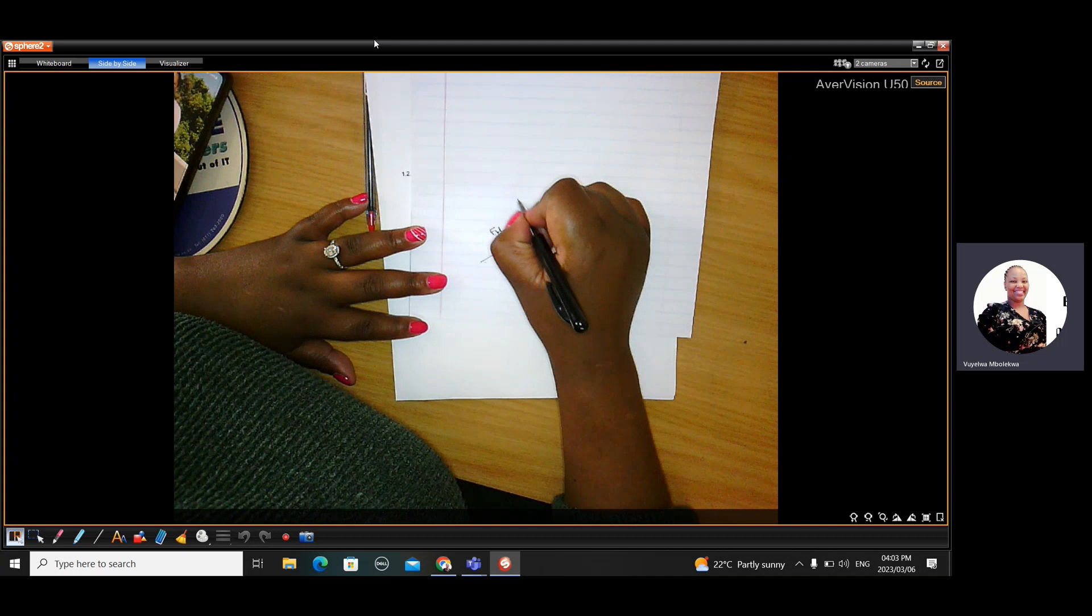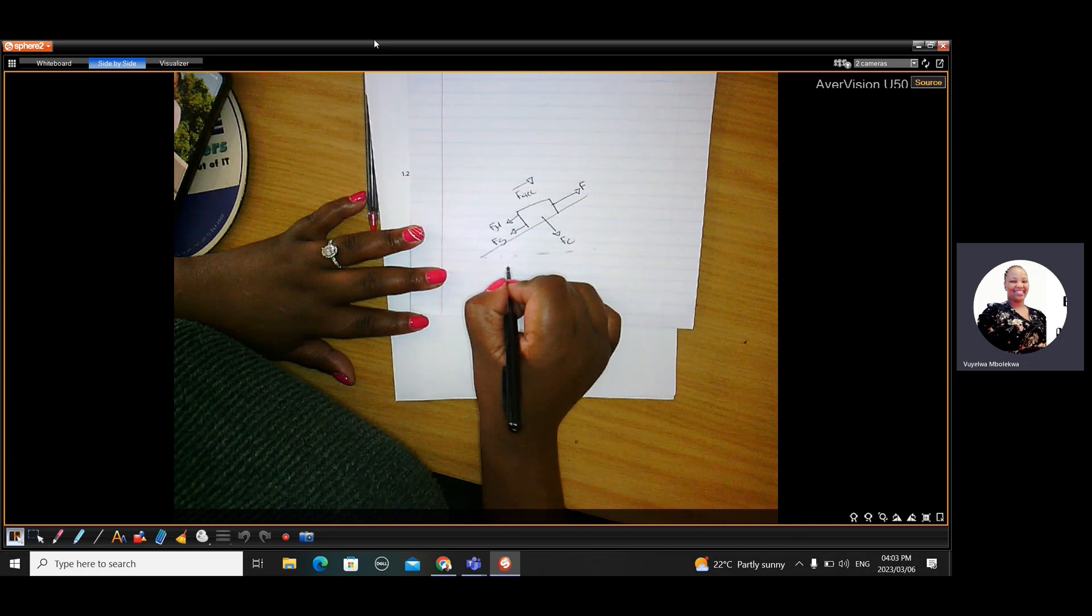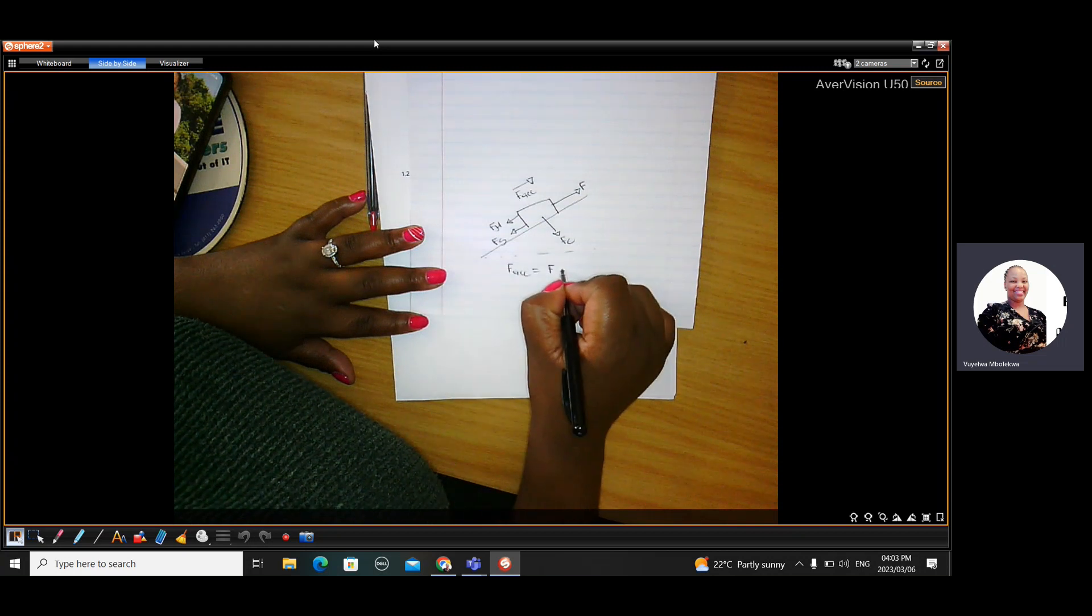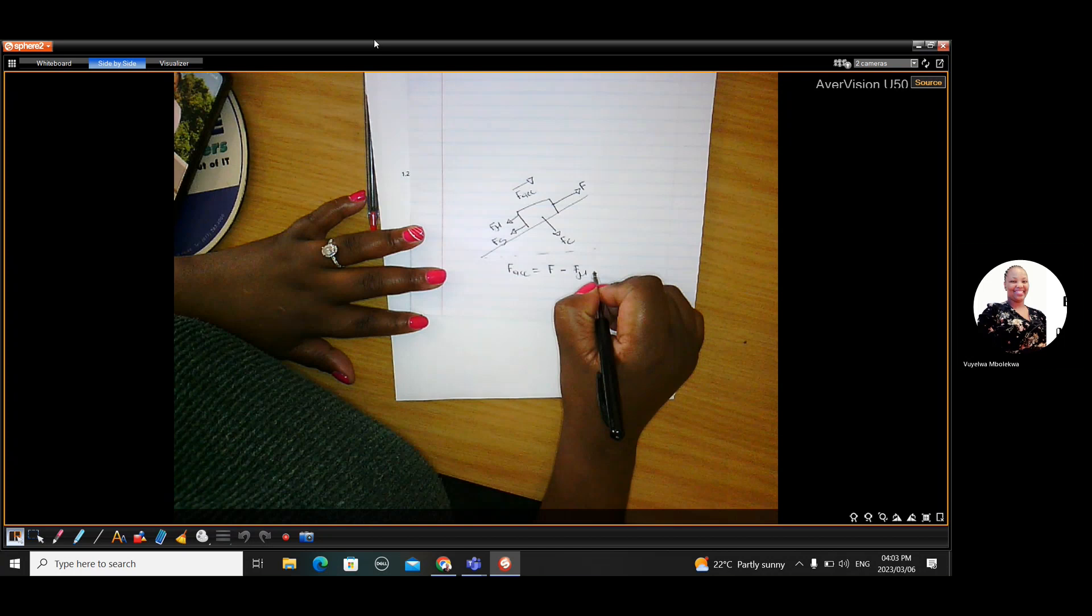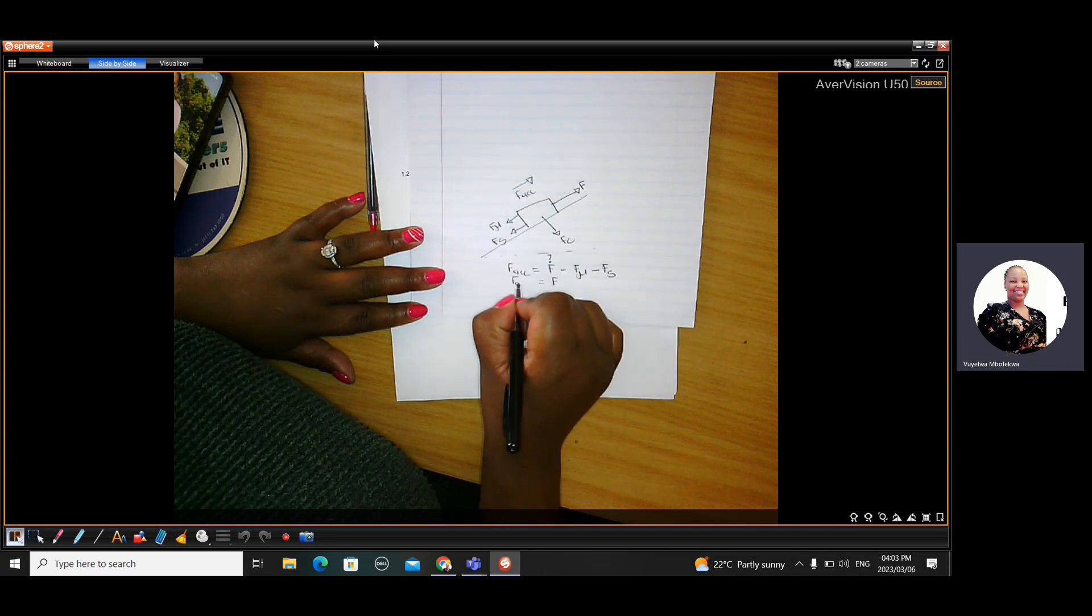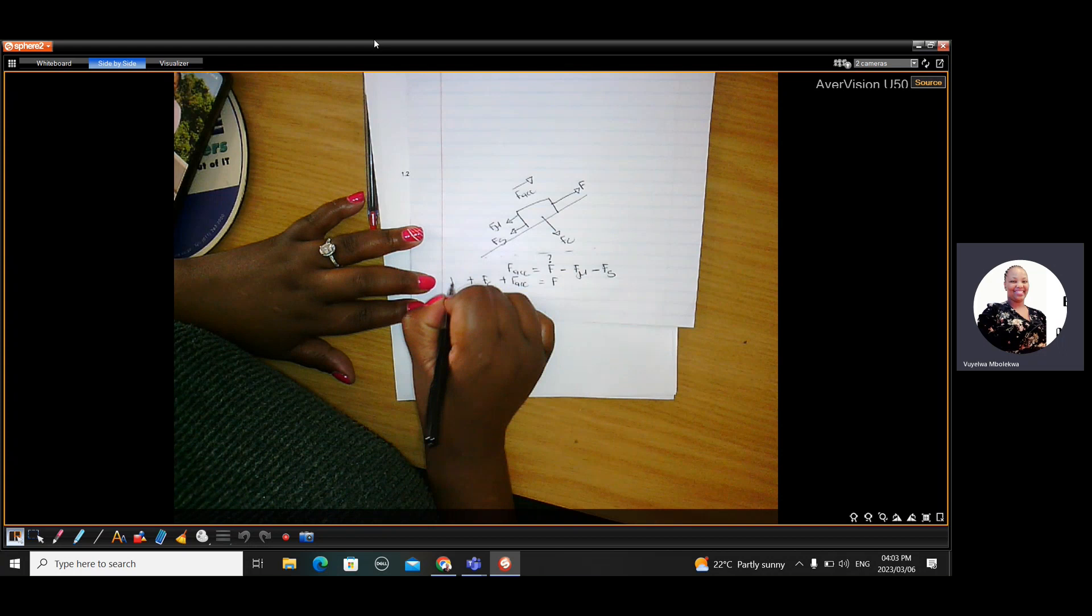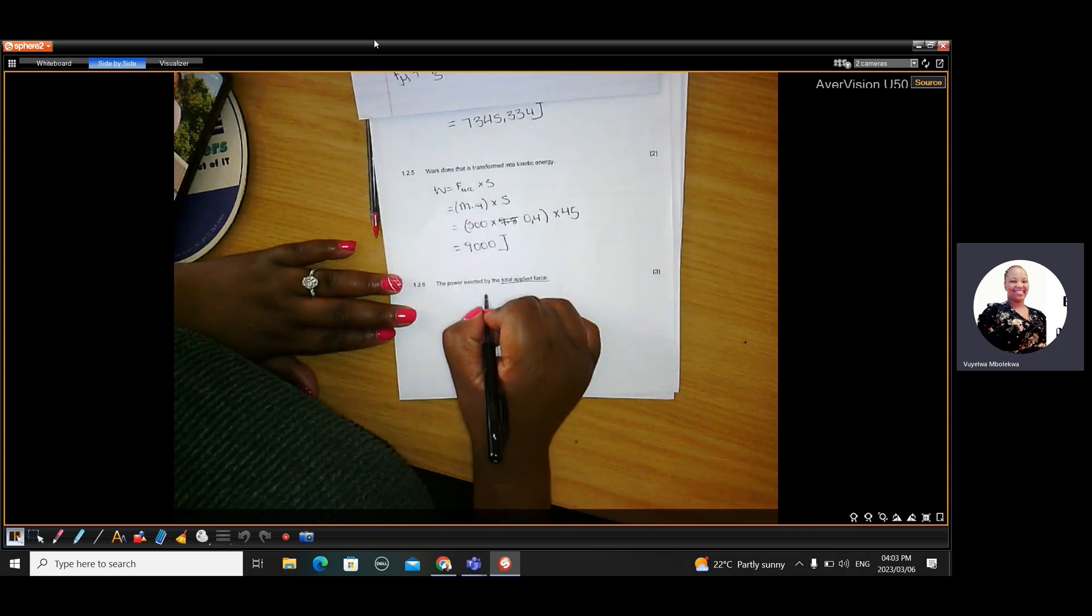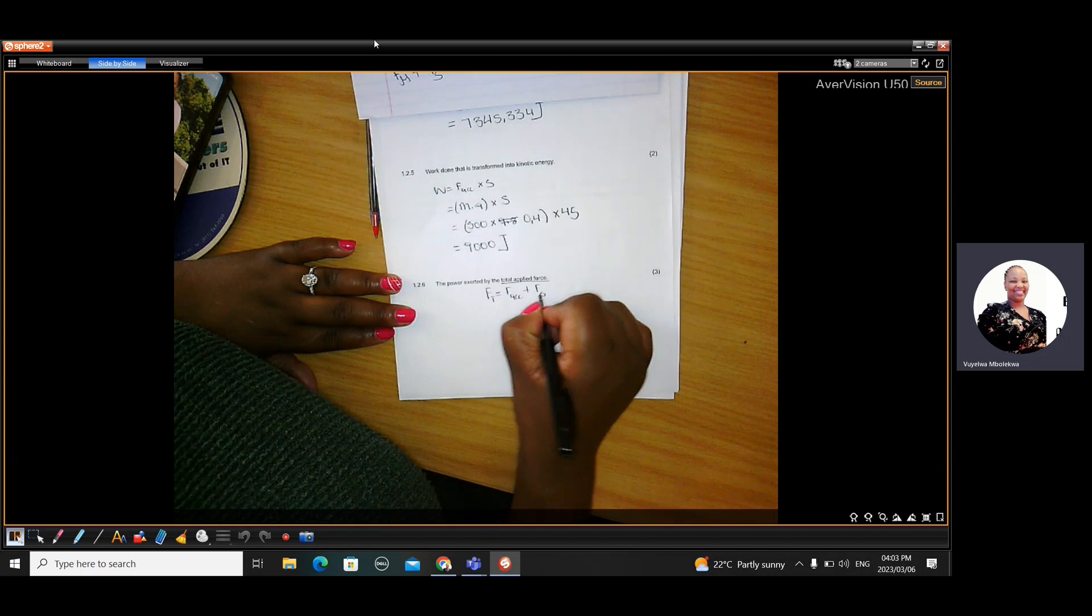So the unbalanced force or the acceleration force would be in this direction. So to get the acceleration force, you'll have to say upward forces minus downward forces. Now this is the force that you want. If you make that force subject of the formula, so you leave it there and you bring these two to the side, they're going to be positive. So that means to calculate the total force, so the applied force is also called the total force, you're going to say the acceleration force plus the FS plus the frictional force.